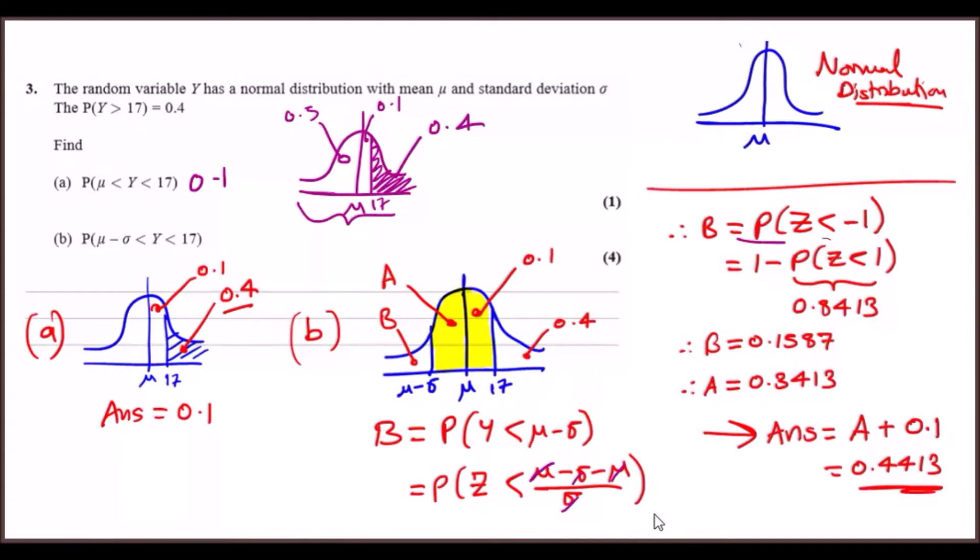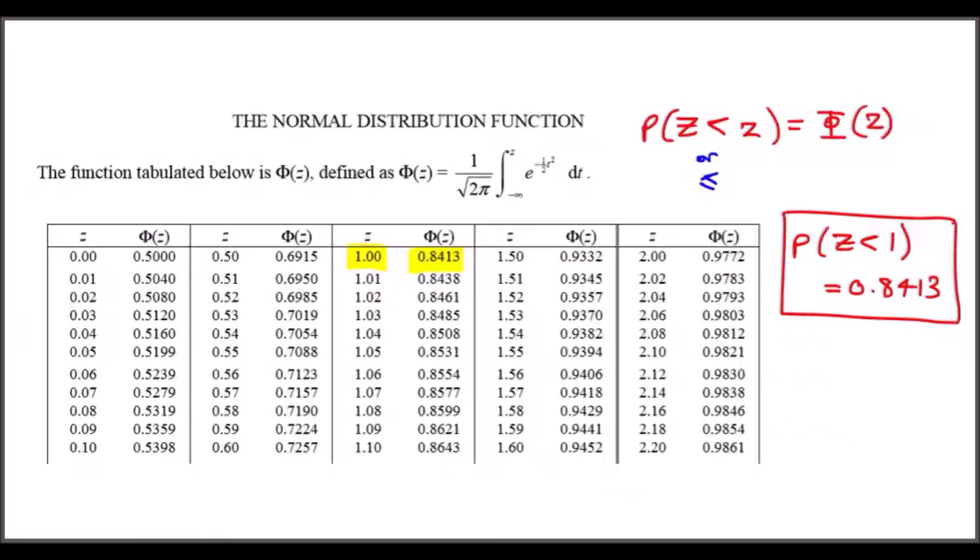You're left with -σ/σ, which again cancels out, and you're left with -1. Now that's the easy bit. From here you can realize that on the normal distribution tables—let me just quickly flick over to it—you're only given table values where z values are all positive.